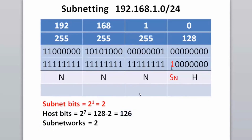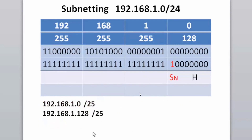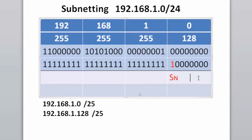By borrowing one bit from the host portion, we create two subnetworks, each with 126 hosts. The subnetworks are 192.168.1.0/25 and 192.168.1.128/25. We can prove this using logical ANDing to show how a router or computer takes an IP address with this slash 25 subnet mask and derives the resulting network address.